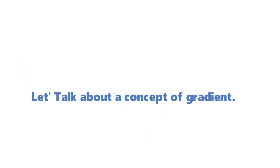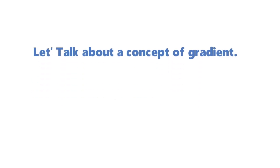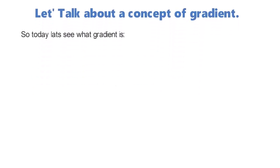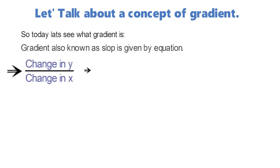Hey kids, let's talk about the concept of gradient today. Gradient is basically the steepness of a line. It is also known as slope and is given by the equation change in y over change in x.